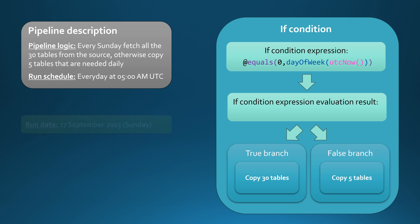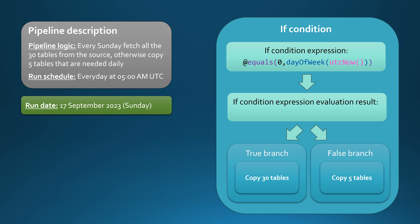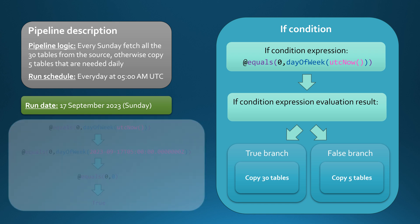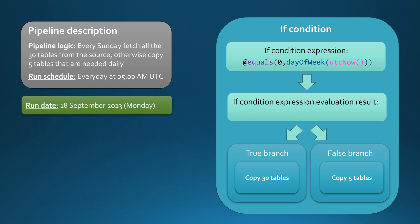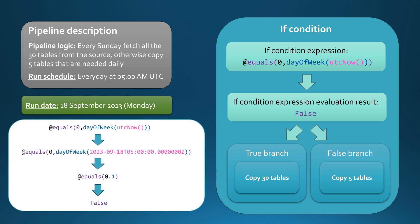Imagine running this pipeline on 17 September 2023, which is Sunday. The If Condition expression evaluates to true, meaning we copy all 30 tables. If we add one day — 18 September 2023, which is Monday — the expression evaluates to false, and we only copy those five tables. You could use any other expression in the If Condition, as long as it eventually resolves to a Boolean value, meaning true or false.